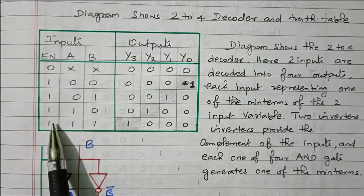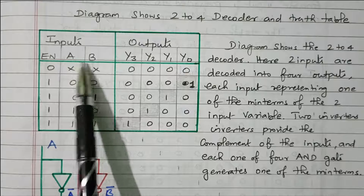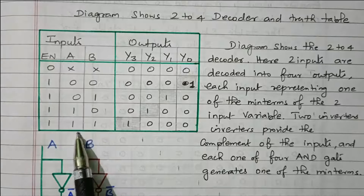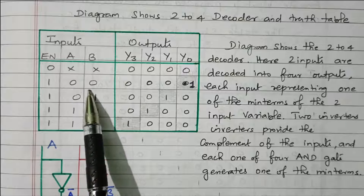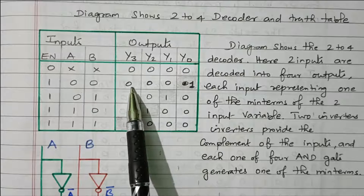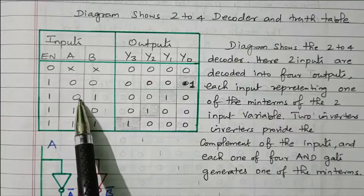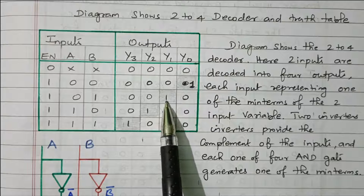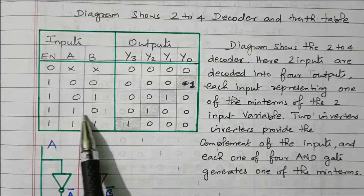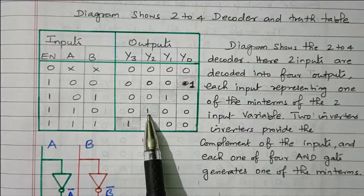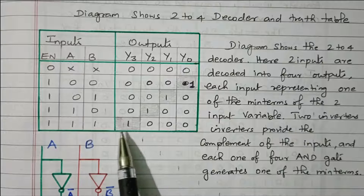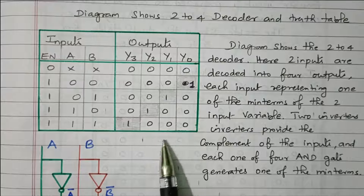If enable is 1, then only the decoder will produce the output. With A and B having 2 digits, there are 4 possibilities: 00, 01, 10, 11. When A and B is 0,0 we get Y0 as 1 and remaining outputs are 0. When A and B is 0,1, Y1 will be 1 and remainders are 0. When A and B is 1,0, Y2 will be 1. When both A and B are 1, we get Y3 is 1 and remainders are 0.